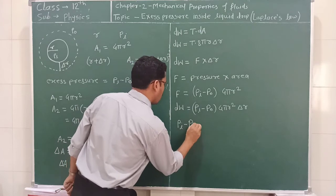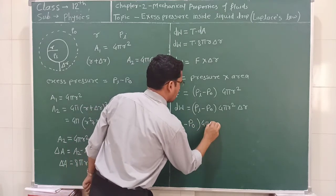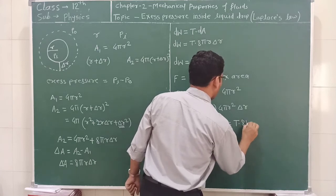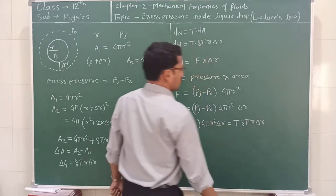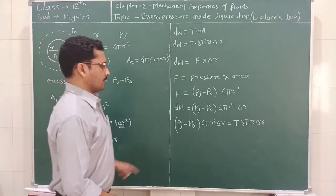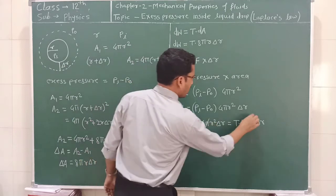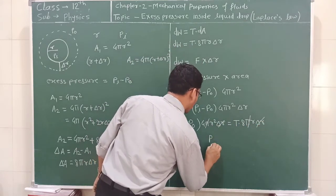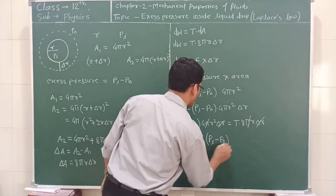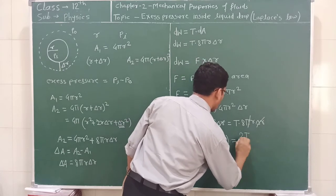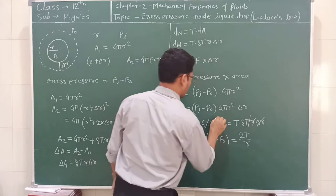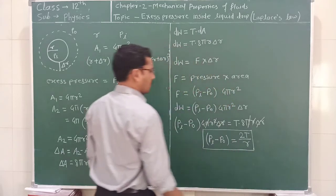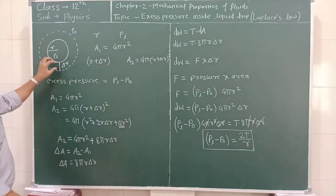So we can equate these two equations and get the equation for excess pressure. We write: (Pi minus Po) times 4πR²·δR is equal to T times 8πR·δR. Cancelling π, π, δR, and δR, after simplification, Pi minus Po is equal to 2T divided by R. This is the equation for the excess pressure required to increase the radius of the liquid drop by delta R.